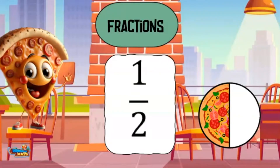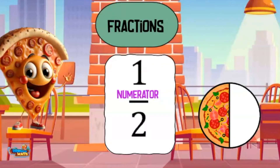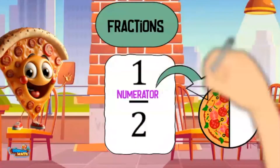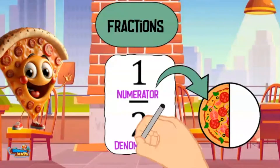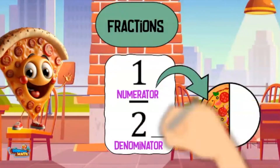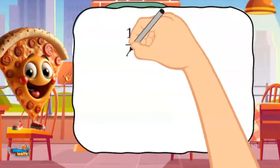A fraction looks like this. The top number of the fraction is called the numerator. This number represents a part of the whole being represented. The denominator is the bottom number and represents the number of equal parts it takes to make the whole.